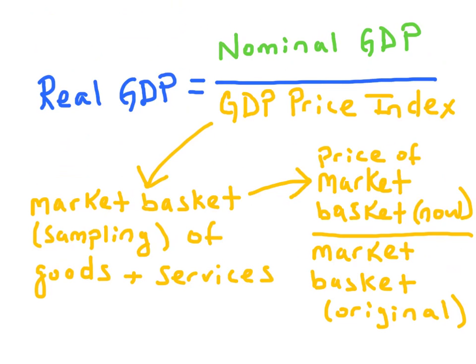To calculate real GDP, you take the nominal GDP and divide it by the GDP price index in hundredths.